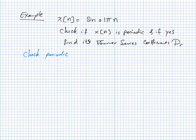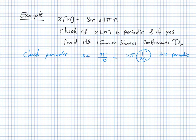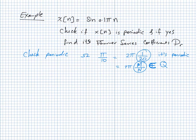To check for periodicity, ω = 0.1π = π/10 = 2π × (1/20). Since 1/20 belongs to the rational numbers Q, this signal is periodic. A signal is periodic if ω can be expressed as 2π multiplied by a rational number M/N.